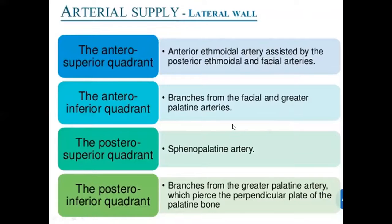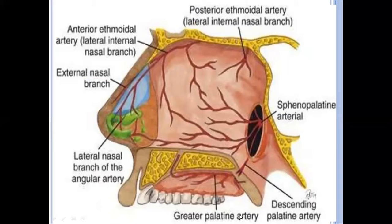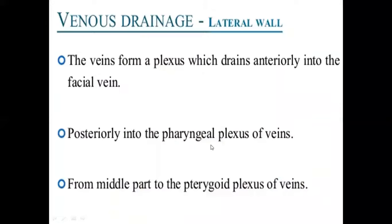Next is the blood supply to the lateral wall. For the arterial supply, the lateral wall is divided into four quadrants: antero-superior, antero-inferior, postero-superior, and postero-inferior. The antero-superior part is supplied by the anterior and posterior ethmoidal arteries, branches from the ophthalmic artery. The antero-inferior part is supplied by the facial artery and greater palatine artery. The postero-superior part is supplied by the sphenopalatine artery. The postero-inferior part is supplied by the greater palatine artery. The sphenopalatine and greater palatine arteries are branches from the maxillary artery. For venous drainage, the anterior part drains into the facial vein, the posterior part into the pharyngeal plexus of veins, and the middle part into the pterygoid plexus of veins.